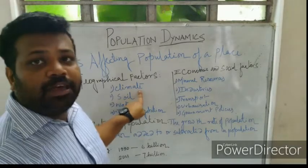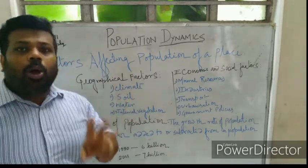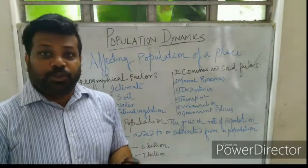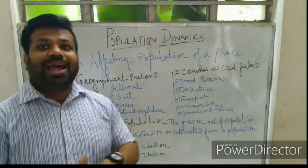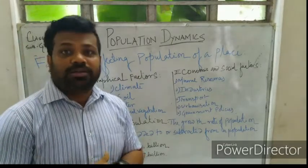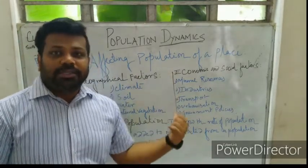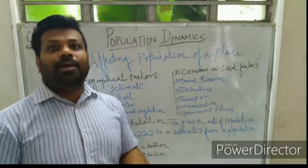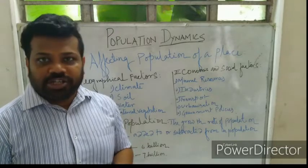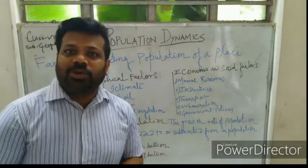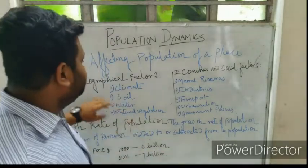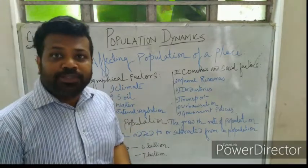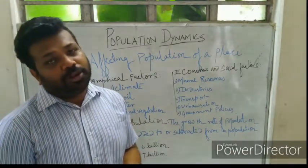How does climate affect population? We prefer to live in a place which has a suitable climate. People do not prefer to live where the climate is too harsh. For example, the equatorial region and the polar region have very low population density because the climate is very harsh there. Next is soil — if the soil is fertile, agriculture is possible and the population will also be high.